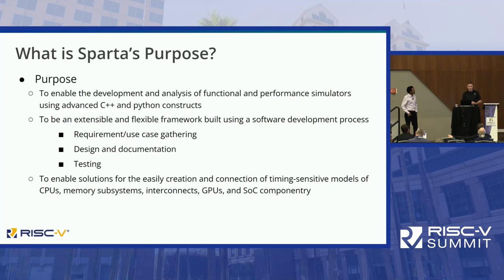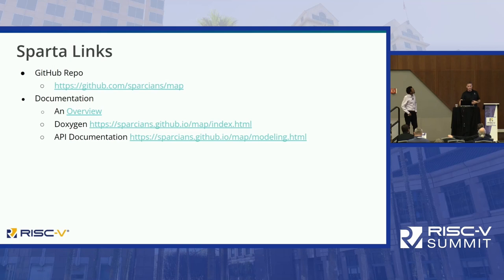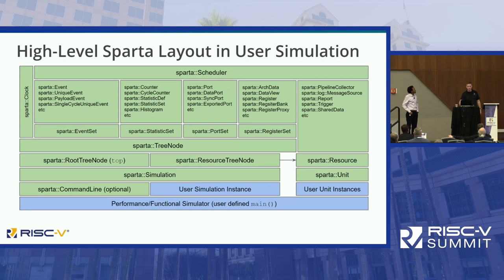Sparta itself — here are the locations where you can find it. There's documentation; the overview is a slide set that describes Sparta at a high level. In the Sparcians MAP repository, if you have any questions, please open a discussion and I'd be happy to answer. I'll leave you with this picture: everything in green is the framework, everything in blue is the RISC-V performance model. So essentially everything that the RISC-V performance model uses is that green framework. With that, I'll hand it over to Arup.